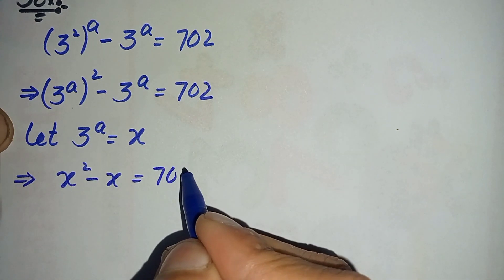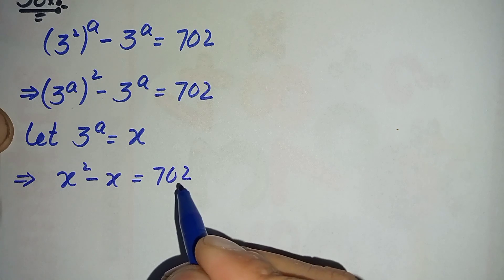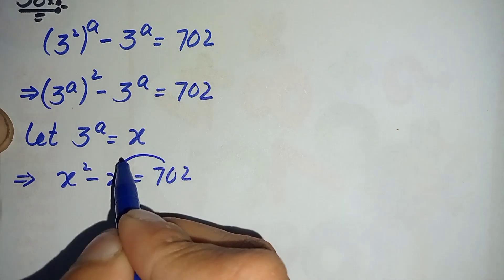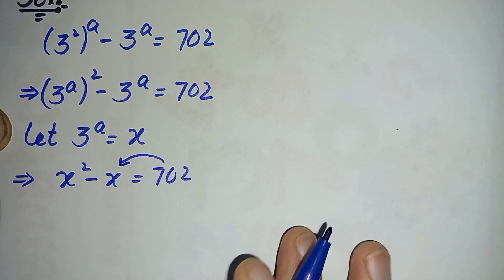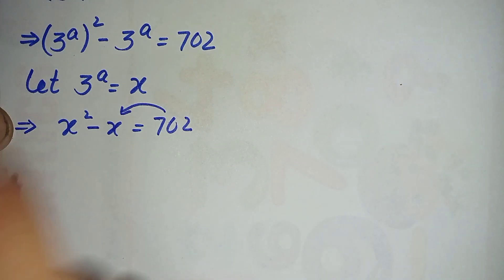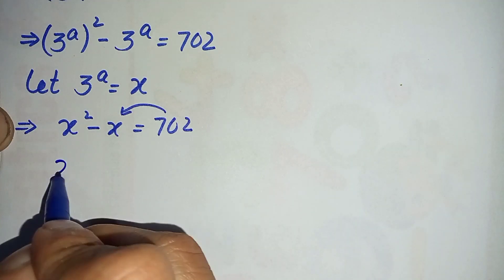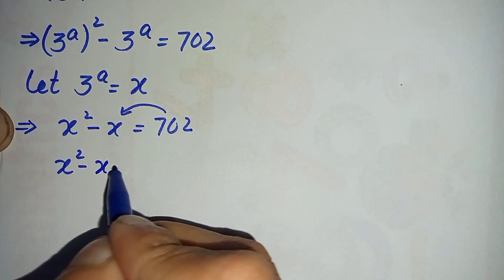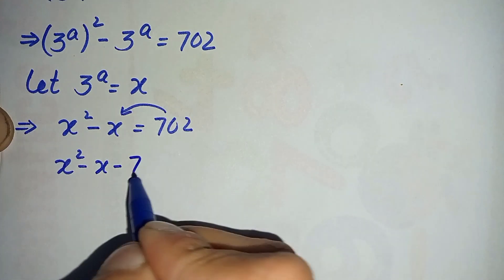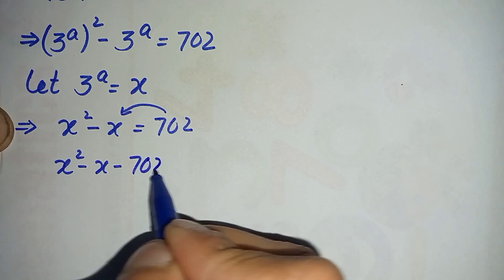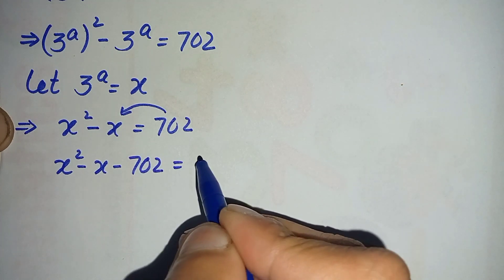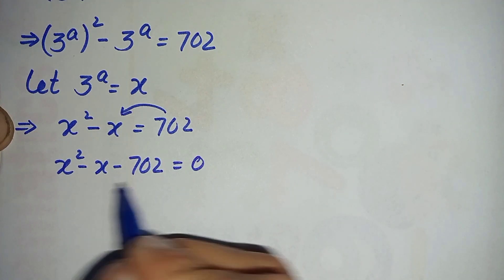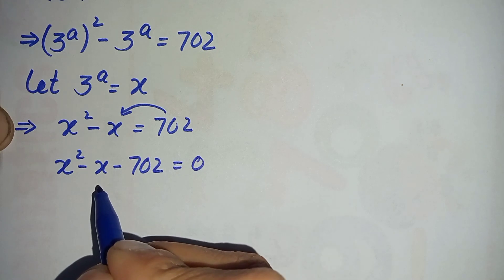So this will become: x squared minus x is equal to 702. Next, we will take this number to the left-hand side, so this will become x squared minus x minus 702 is equal to 0.